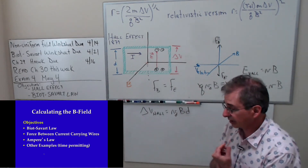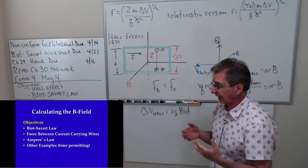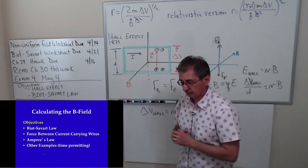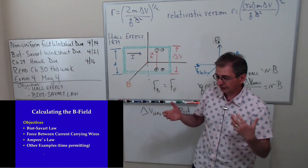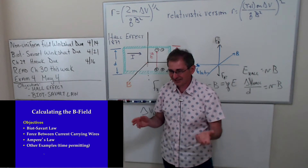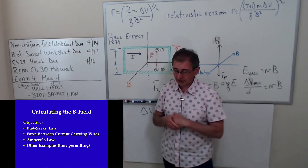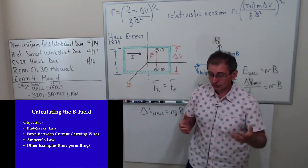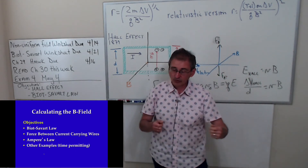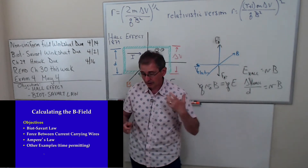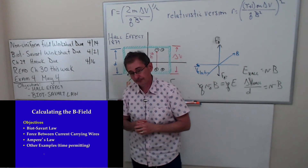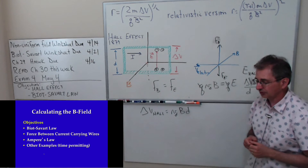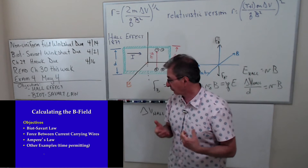Now we get into the mathematics. The big ideas here are the Biot-Savart Law and Ampere's Law — we'll be looking at magnetic fields due to current in a wire. We already know magnetic fields are due to moving charges and are a manifestation of relativity. It was Oersted who discovered that a current in a wire produces a magnetic field: if you run a current through a wire and put a compass near it, you'll see the compass rotate, telling you the wire acts like a magnet.